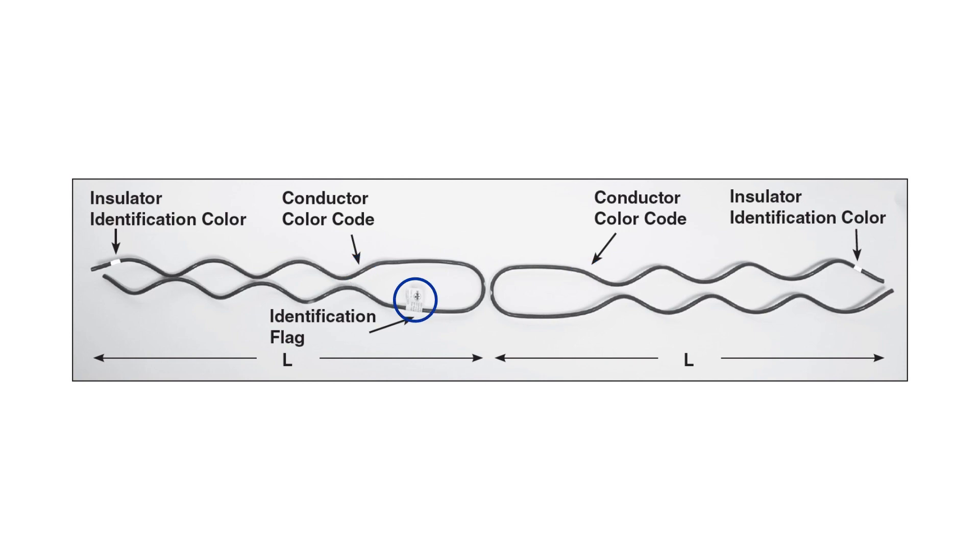The identification flag designates the most common conductor sizes covered by the tie's range, the complete conductor range, the insulator information, and catalog number.